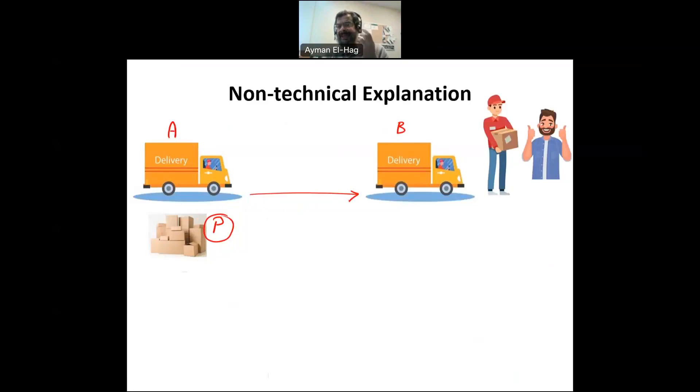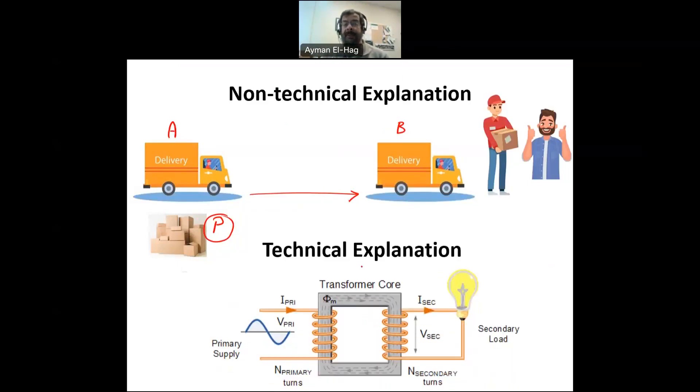Now, one of the best examples I can give from the power system to try to explain reactive power is the following example. Imagine we have a transformer and we want to move the energy from point A to point B.